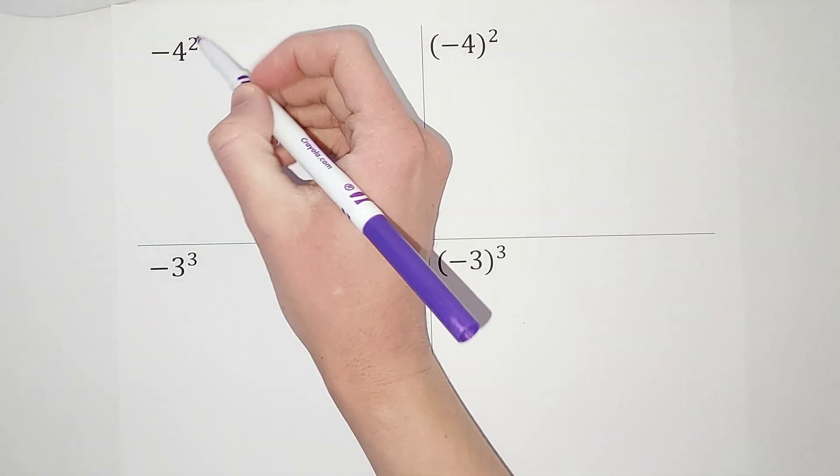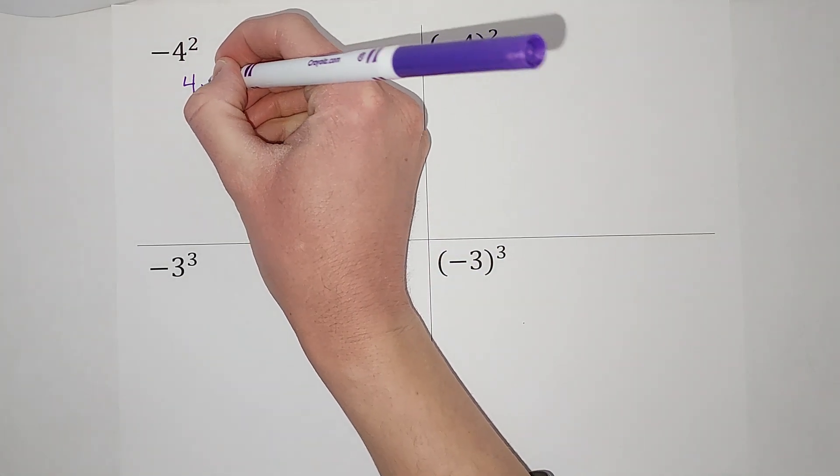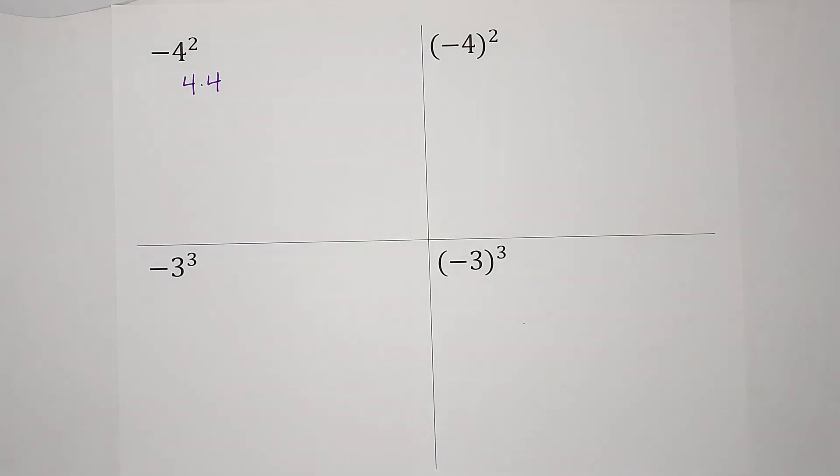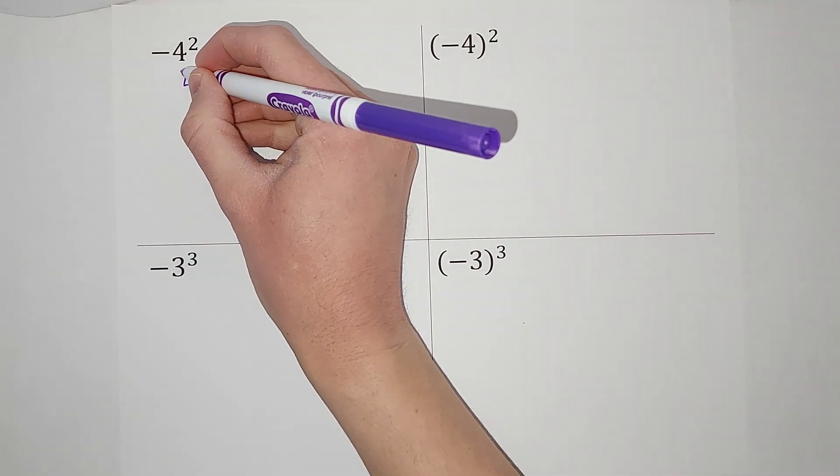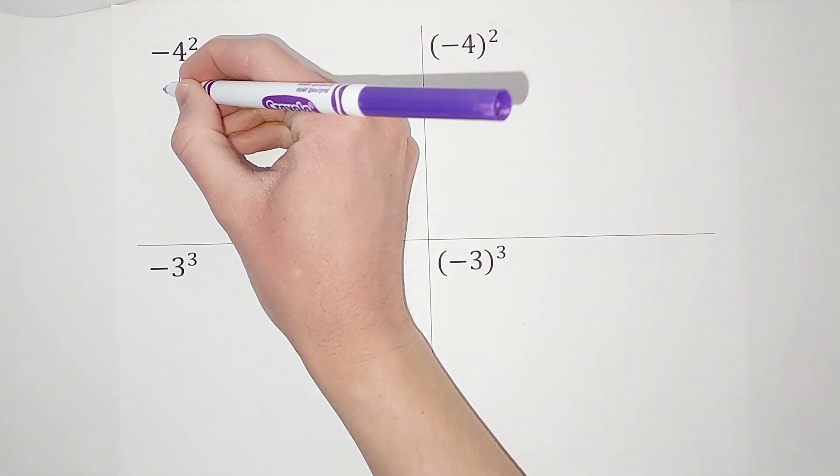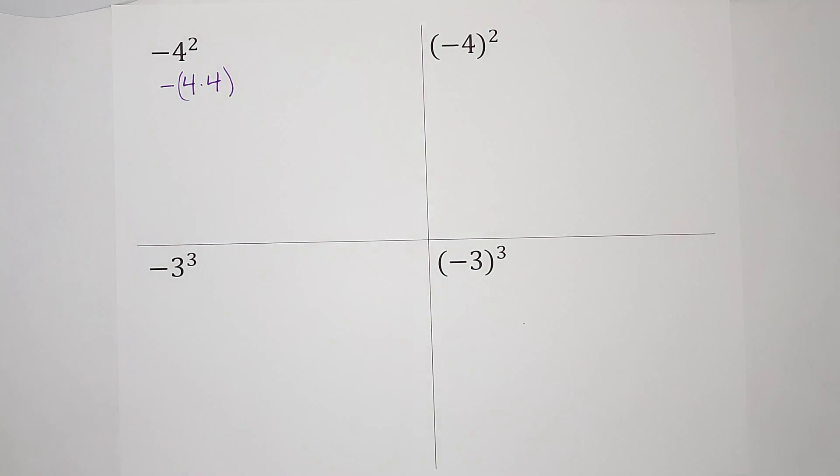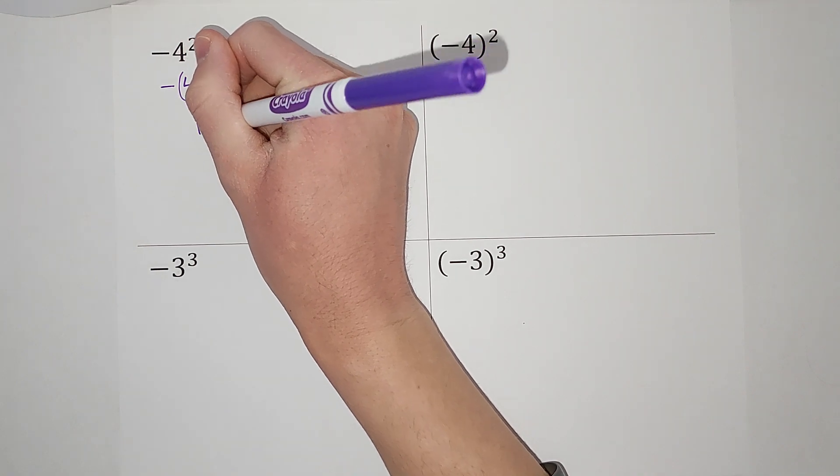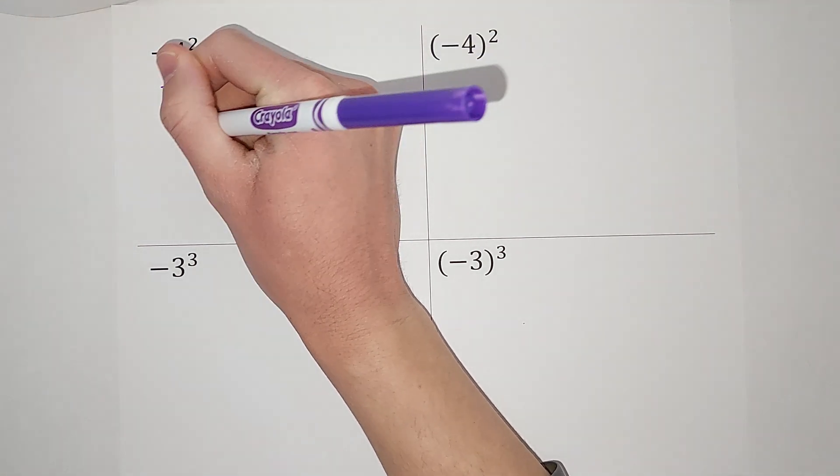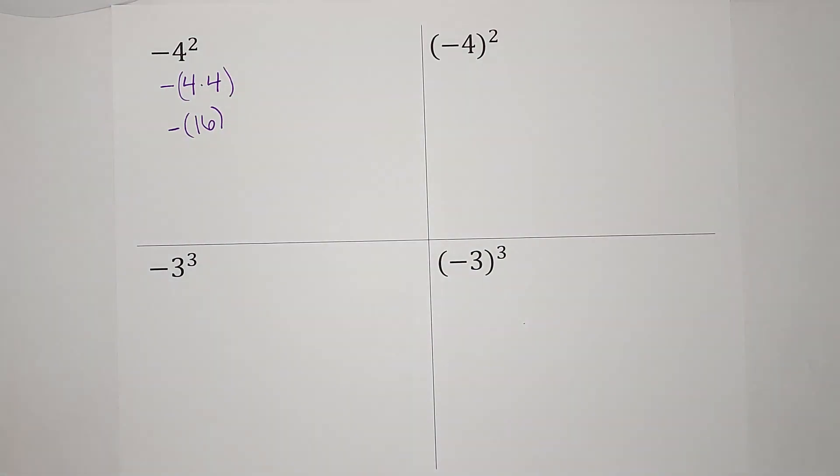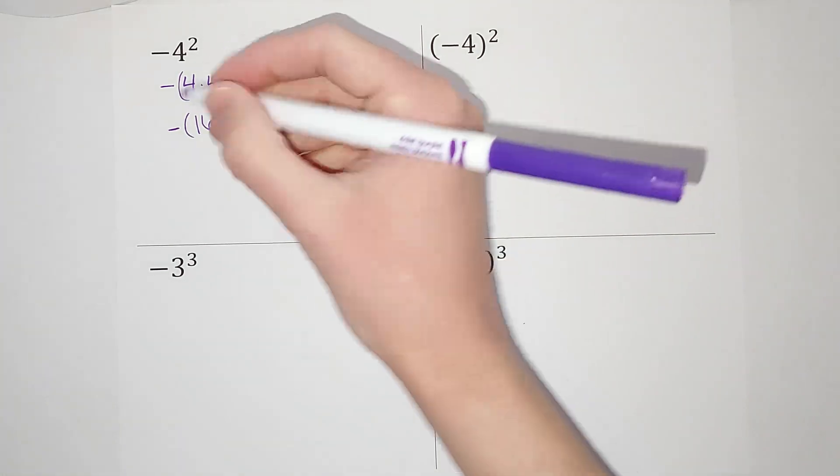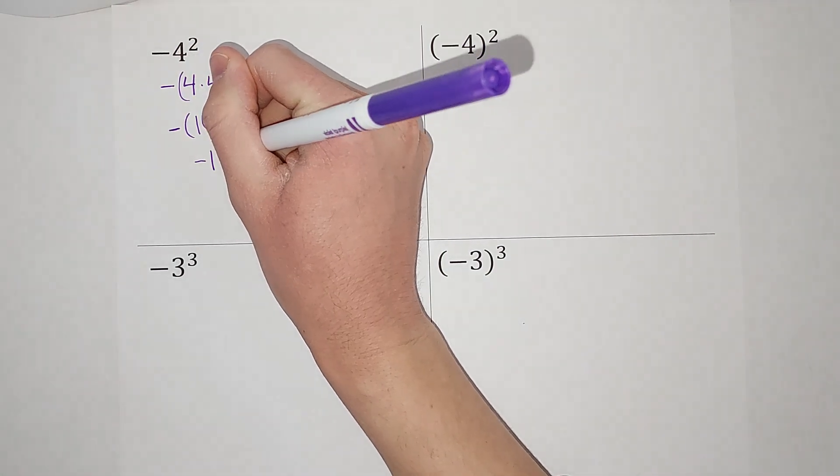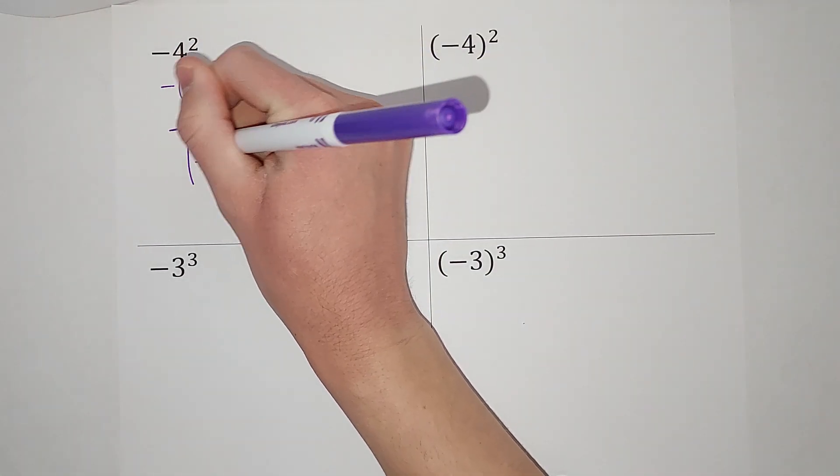This does not mean four times two. This means four times itself twice, four times four. That is what the squared applies to, and my negative is outside. So four times four gives me 16. That's what's still inside. We still have that negative on the outside that gets distributed in, so then I have a negative 16.